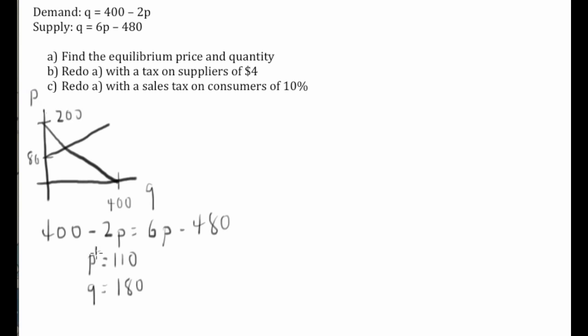In fact, we put asterisks on these to indicate that those are the equilibrium values. So that quantity is 180. So that's 180 right there and 110.